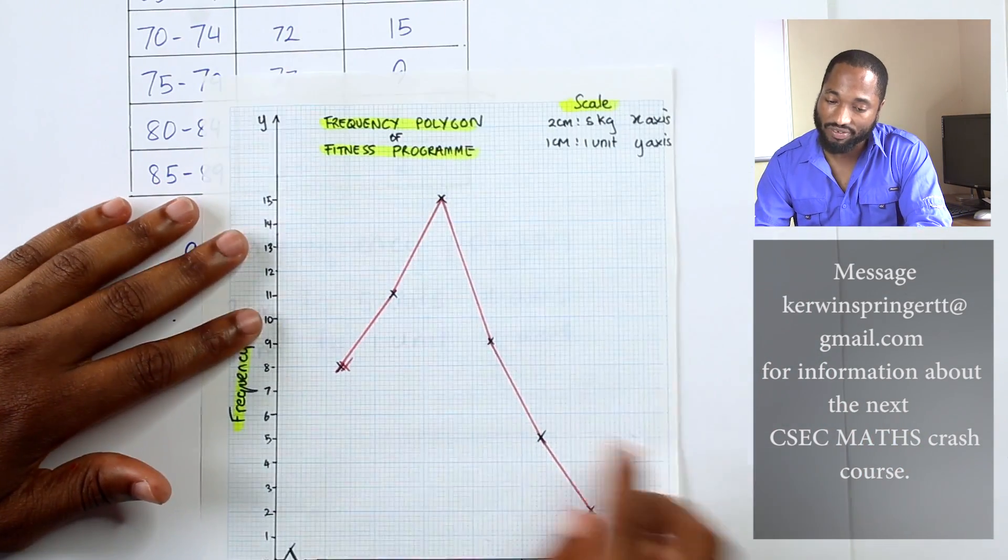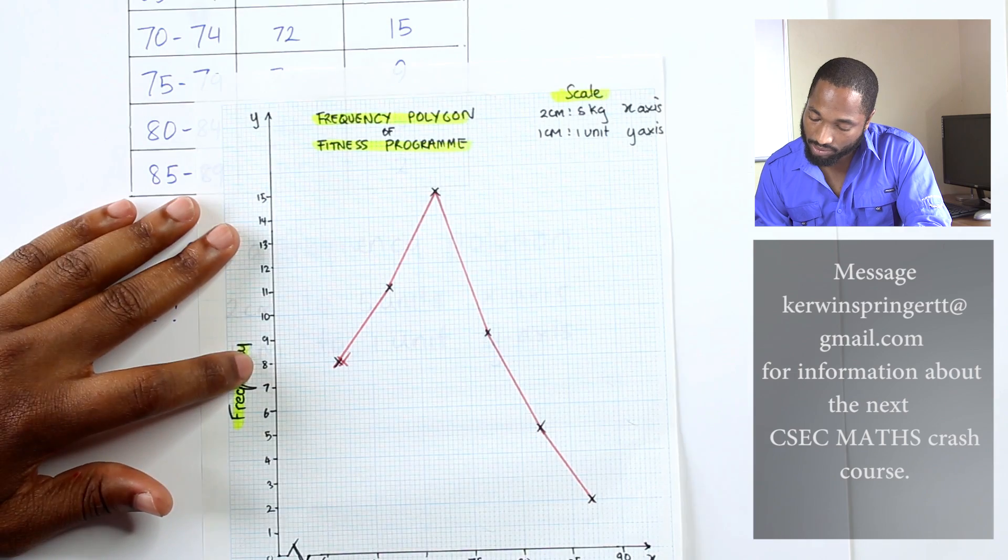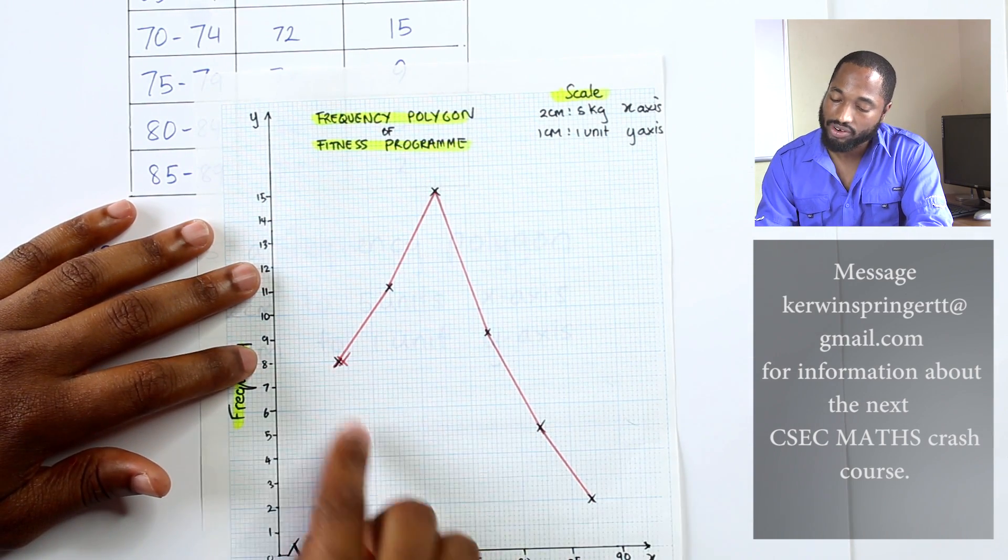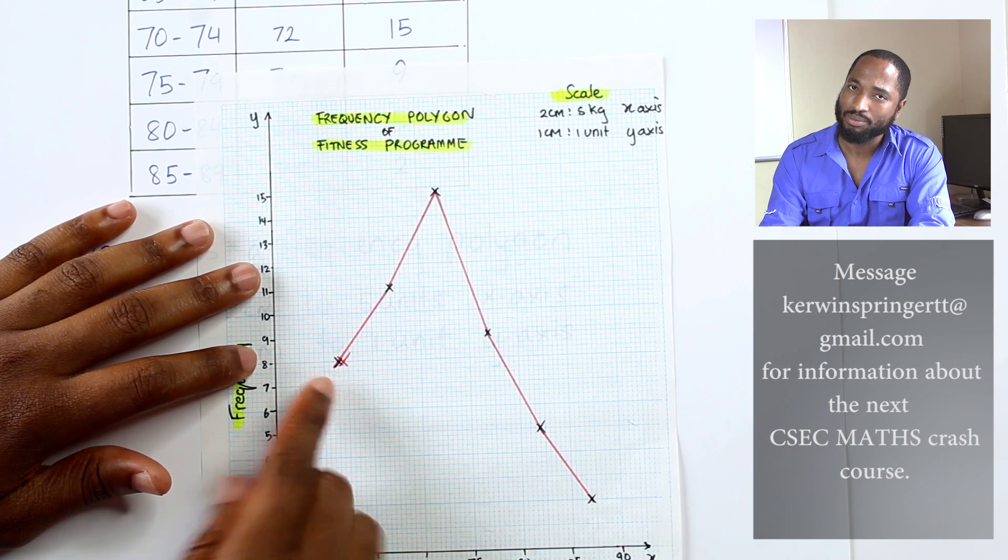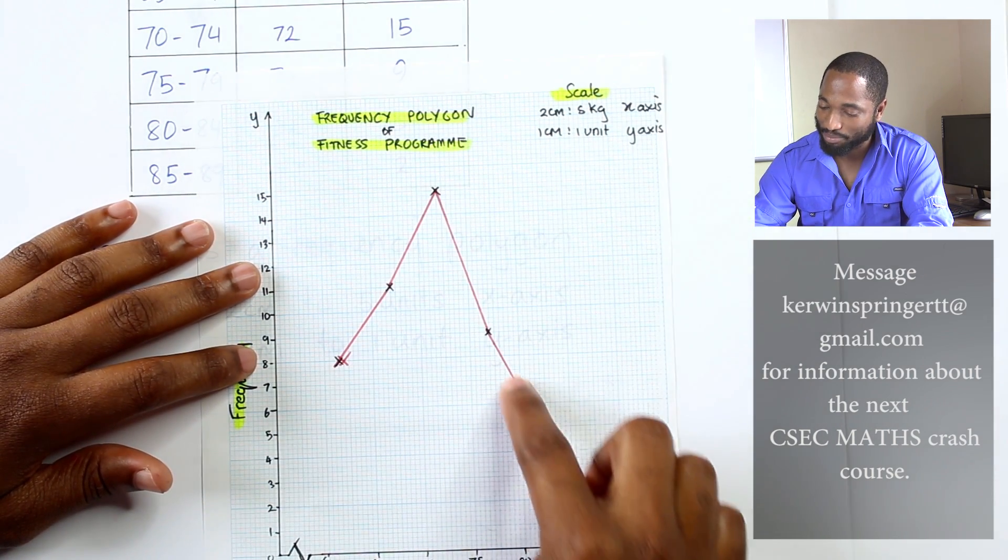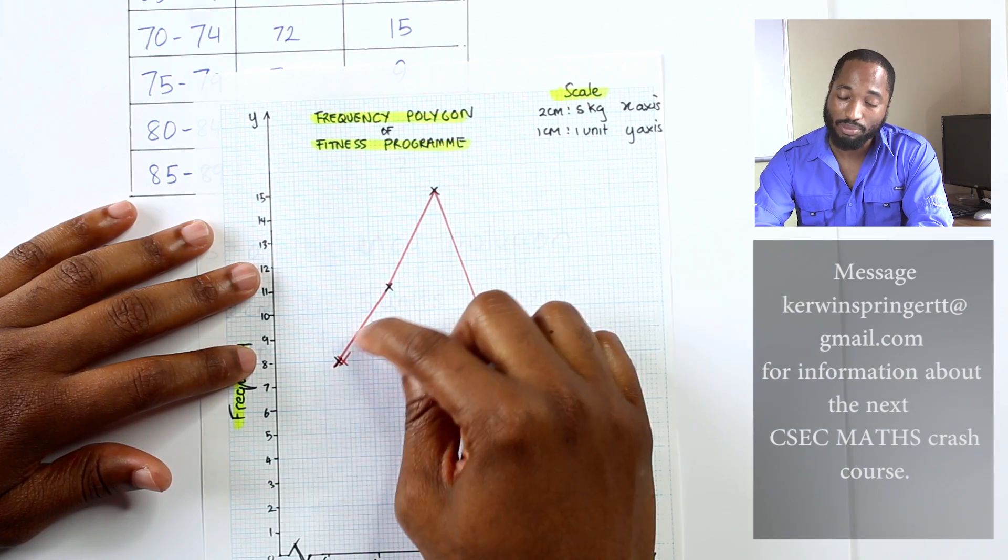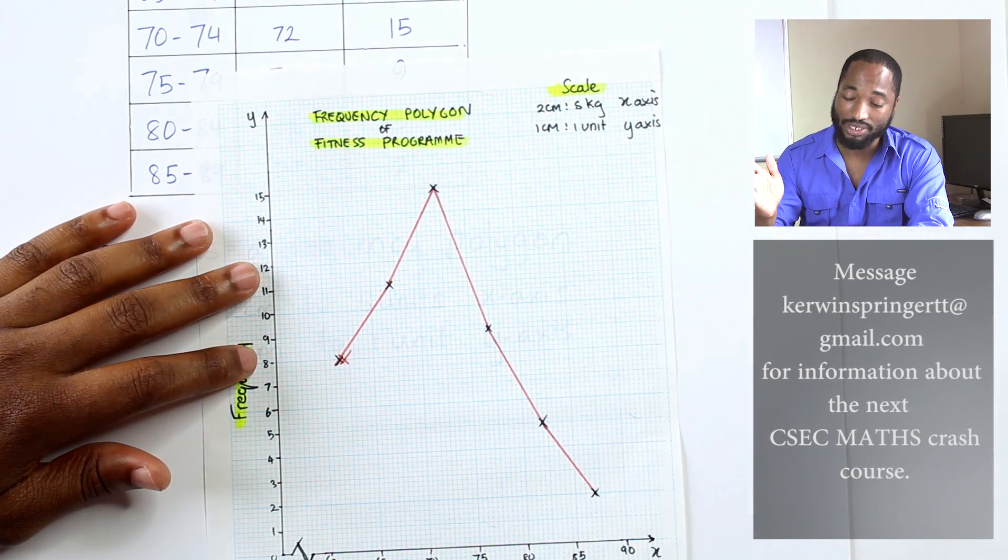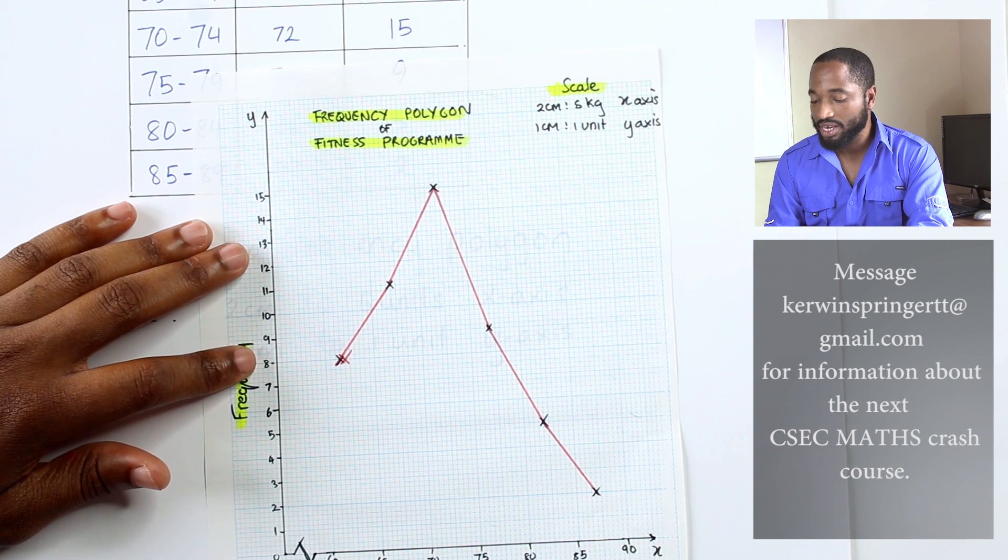The diagram will come out looking like this. Let's just check the first point, 62, 62, eight, eight. You see that point is a little off, but you're doing the exam, not me. All the other points are on point. Remember, all the frequency polygon, don't try to draw no fancy curve or anything. It's a polygon. You need straight lines between points.